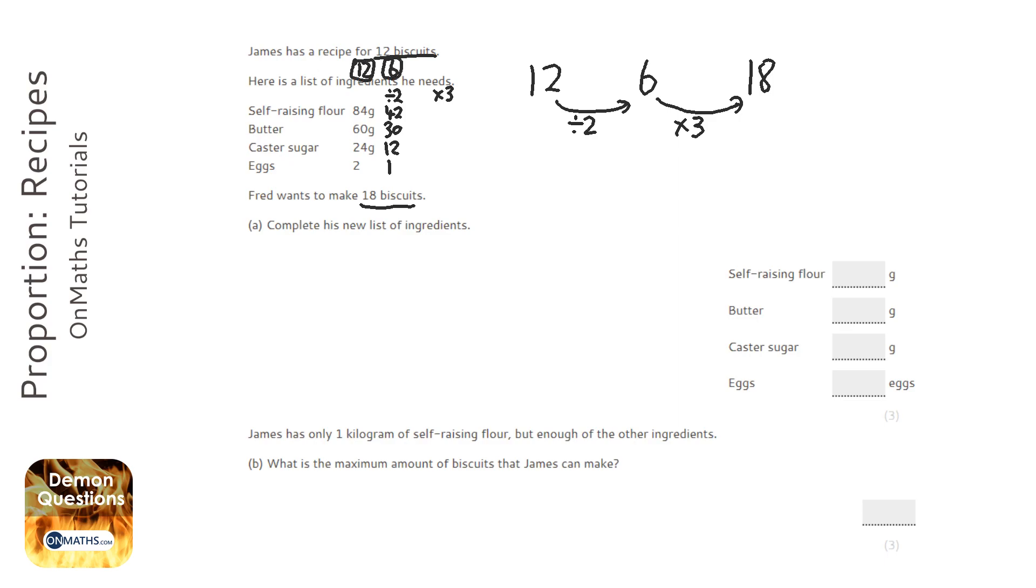A different way of doing this is just adding them together. 12 plus 6 is 18, so instead of timesing the 42 by 3 I could just add it to the 84. So I could just do 84 plus 42, which would be 126. Again, 60 plus the 30 which is 90, 24 plus the 12 which is 36, and 2 plus the 1 which is 3.